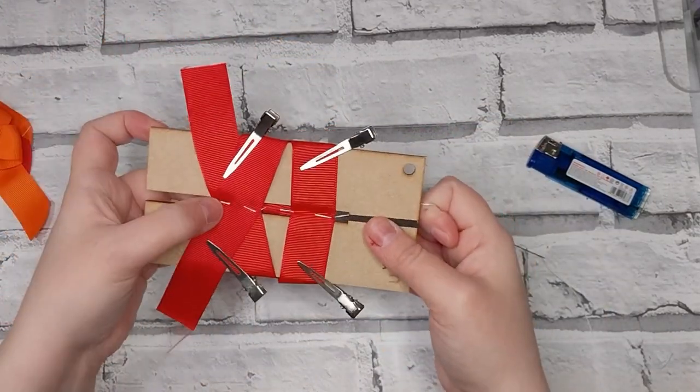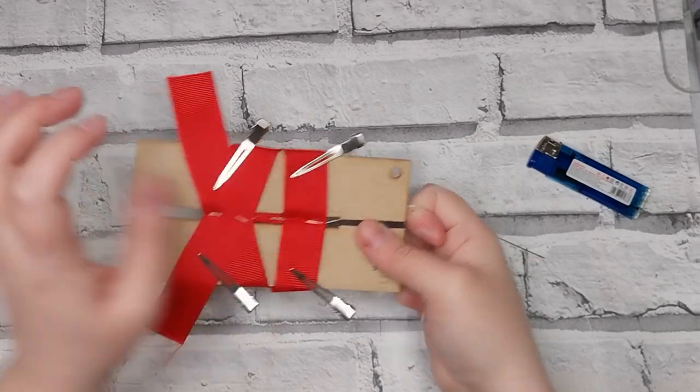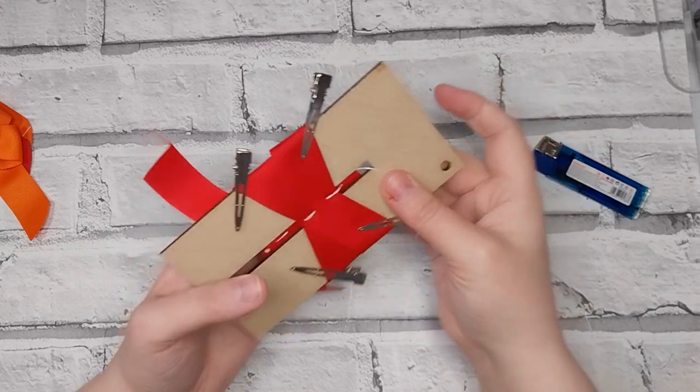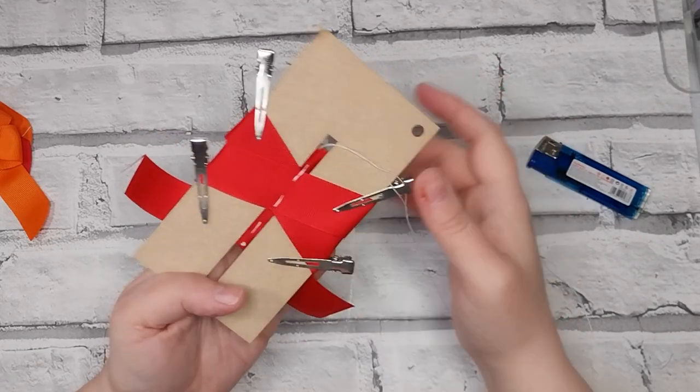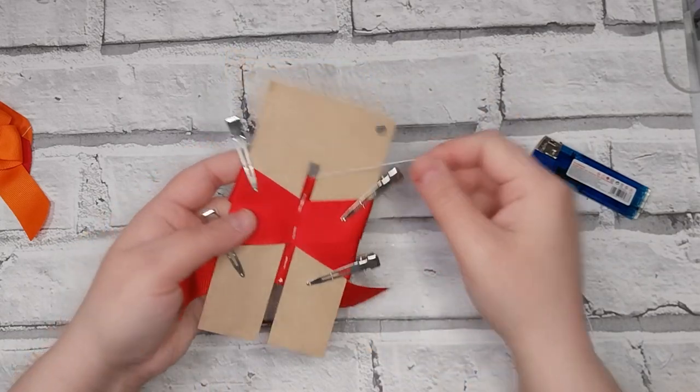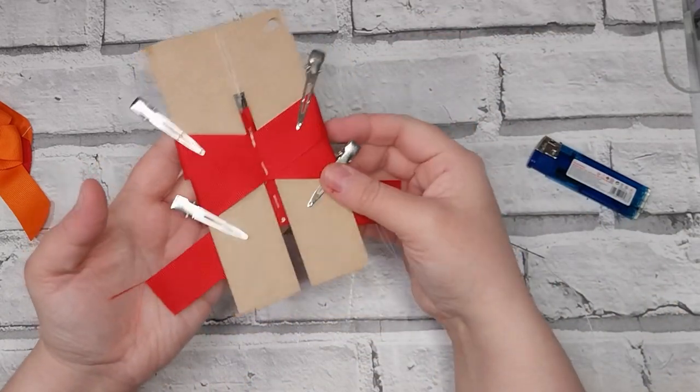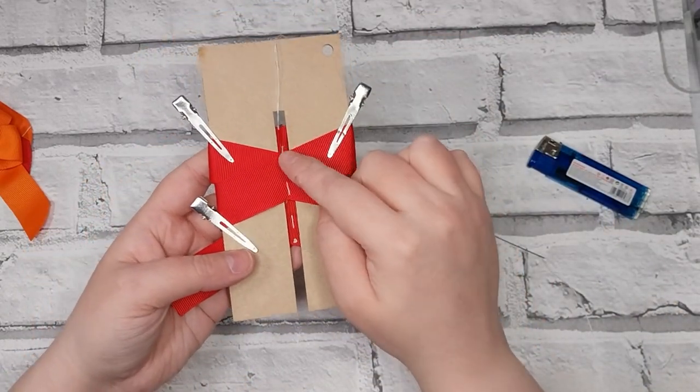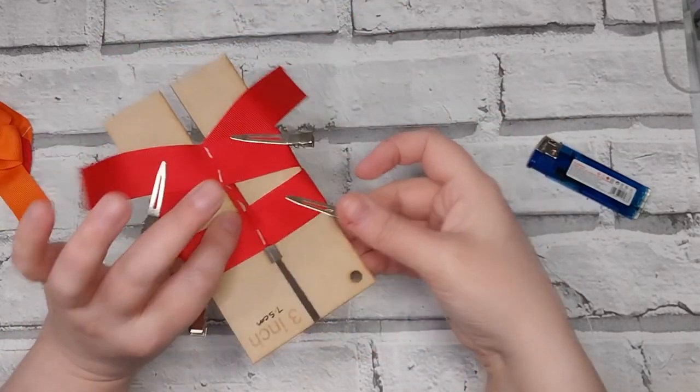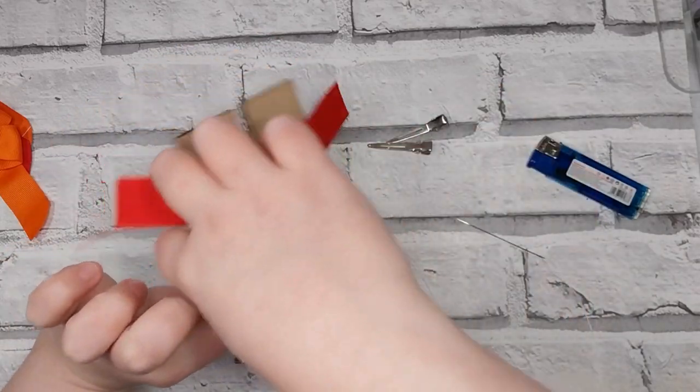As you can see on here, one two three four and one two three four five six seven eight. One two three four five six seven eight, so that's how it should look. In one two three out, one two three four. Then you can take all your clips off.